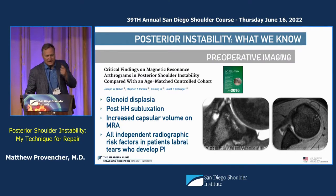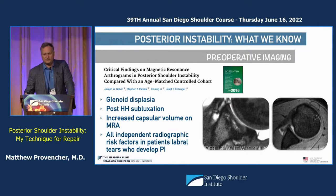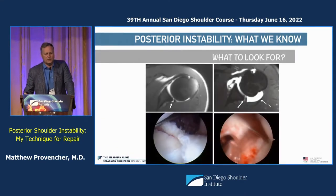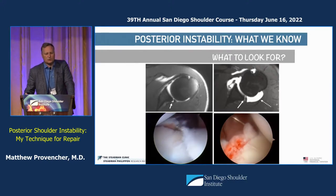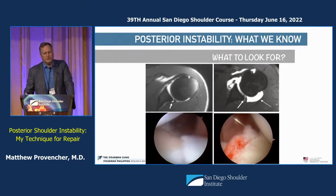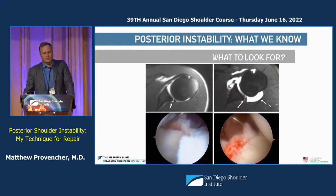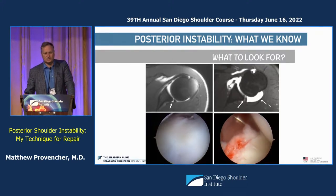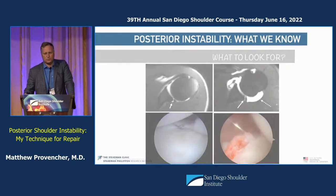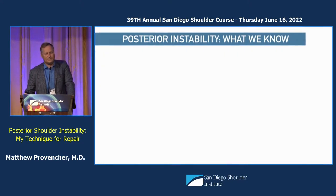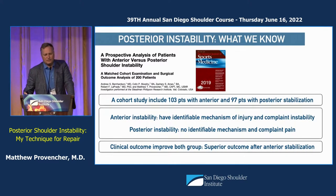If we have findings of dysplasia or subluxation, Gilles Walsh and others have told us we may not be able to fix this with a repair no matter what, so you want to be careful. On this arthrogram image you can see a very clear posterior tear, the classic tear findings posteriorly, and sometimes a very patchy capsule — there's a wide variety of pathology in terms of how these patients present.